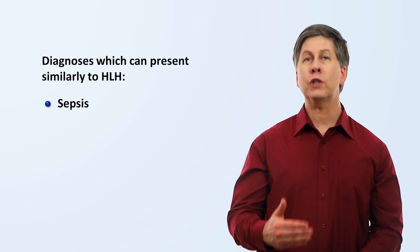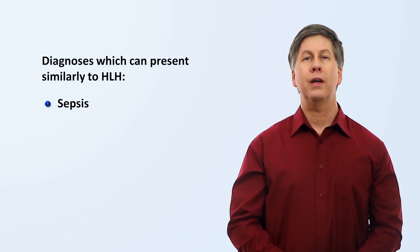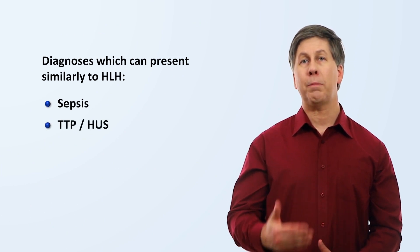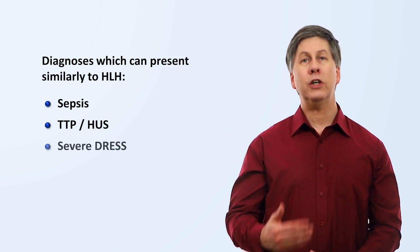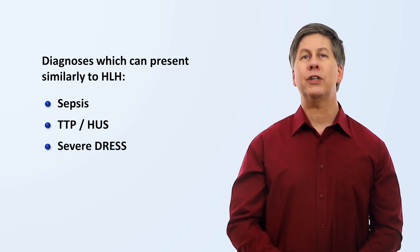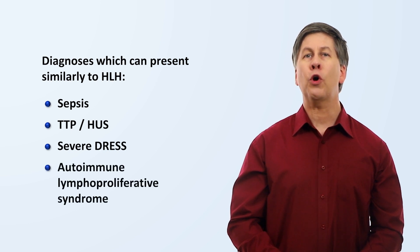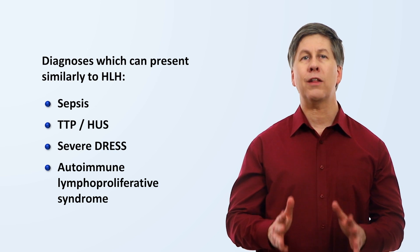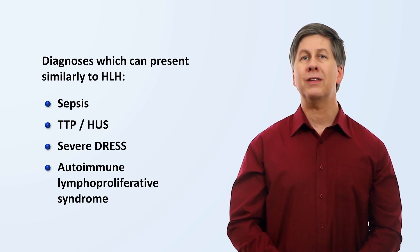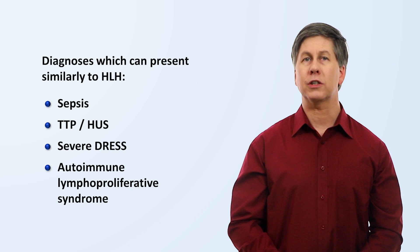In addition to sepsis, some other diagnoses which can be confused for HLH and vice versa include thrombotic thrombocytopenic purpura, hemolytic uremic syndrome, severe DRESS, and a rare genetic condition called autoimmune lymphoproliferative syndrome in which patients are unable to normally regulate their numbers of lymphocytes due to an impairment in lymphocyte apoptosis.